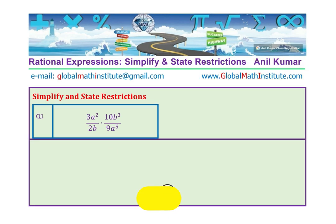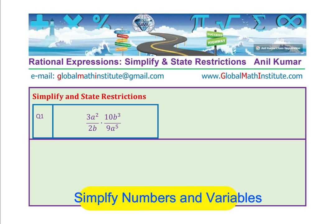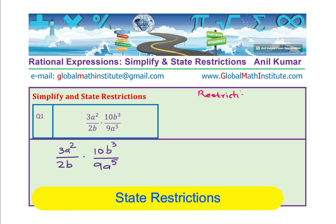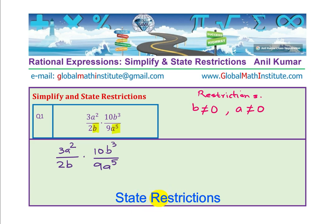Beginning with the first question: 3a squared over 2b times 10b cubed over 9a to the power of 5. Let us write down the restrictions. For restrictions, the denominator cannot be 0. So b is not equal to 0, which is in the denominator, and then a also cannot be equal to 0. These are the clear restrictions for this expression.